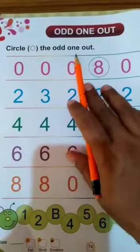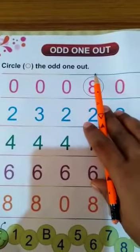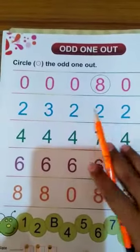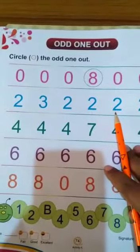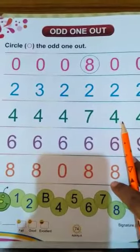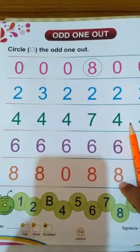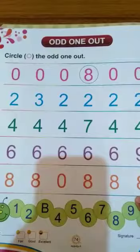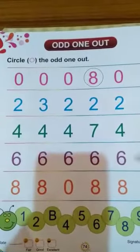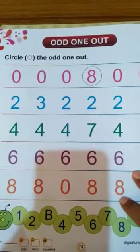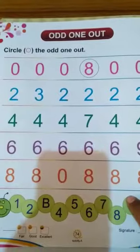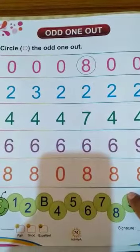Circle the odd one out. Yesterday you have done this work in your EBS class. Odd one to color. Today you are going to do in your math activity book, activity book page number 74.